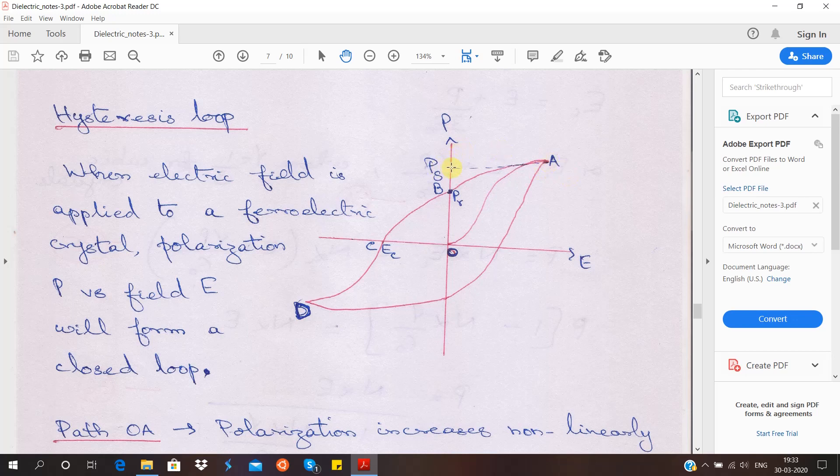Once it has obtained the maximum polarization, we are going to reduce the electric field and see if the polarization becomes zero. If I reduce the electric field, the polarization reduces but it does not become zero. It reduces and comes to a particular value called residual polarization or remnant polarization denoted by Pr. The polarization has still not come to zero when you even brought the electric field to zero.